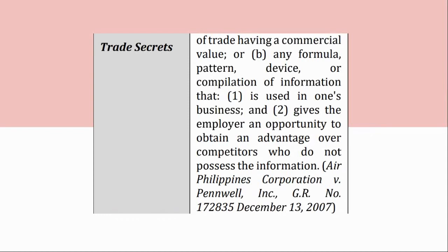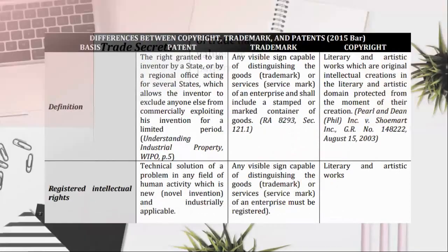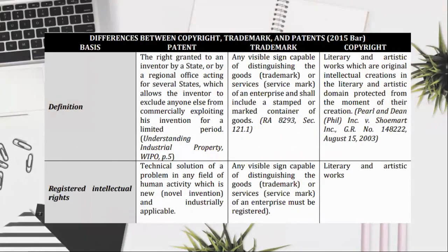Differences between copyright, trademark, and patents (2015 bar). Patent: the right granted to an inventor by a state, or by a regional office acting for several states, which allows the inventor to exclude anyone else from commercially exploiting his invention for a limited period. Trademark: any visible sign capable of distinguishing the goods (trademark) or services (service mark) of an enterprise, and shall include a stamped or marked container of goods. Copyright: literary and artistic works which are original intellectual creations in the literary and artistic domain, protected from the moment of their creation. Pearl and Dean, Phil., Inc. v. Schumart, Inc., GR No. 148222, August 15, 2003.